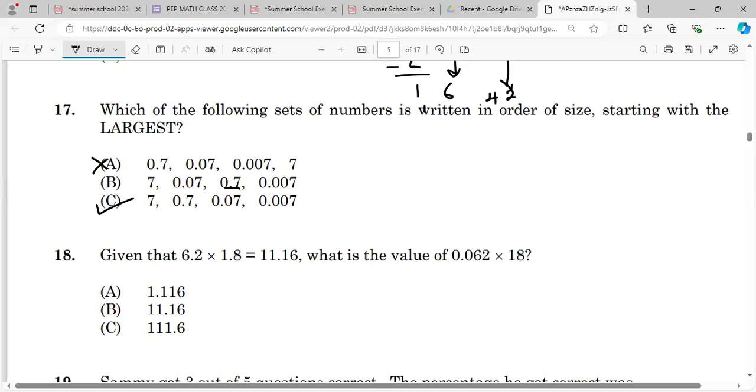Given that 6.2 times 1.8 equals 11.16, what is the value of 0.62 times 18? So all we have to do is count the number of decimal places, which is three. So we can write 11.16, but it should be three decimal places because it's three here. Here we had one, two. So now we have one, two, three, so it's 1.116.